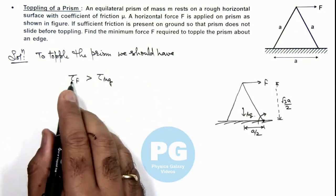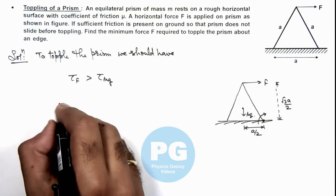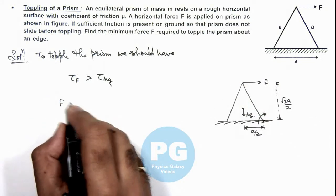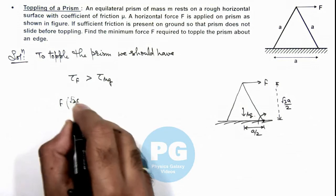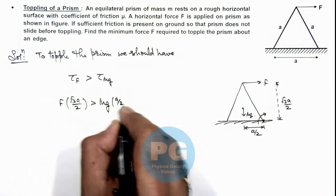So in this situation, about the bottom edge, we can say the torque due to the force is F multiplied by root 3 a by 2. This should exceed mg multiplied by a by 2.